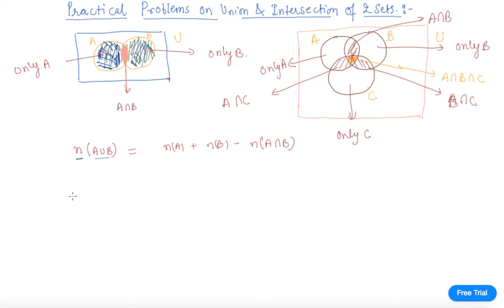The formula for three sets is N(A∪B∪C) = N(A) + N(B) + N(C) - N(A∩B) - N(B∩C) - N(C∩A) + N(A∩B∩C).